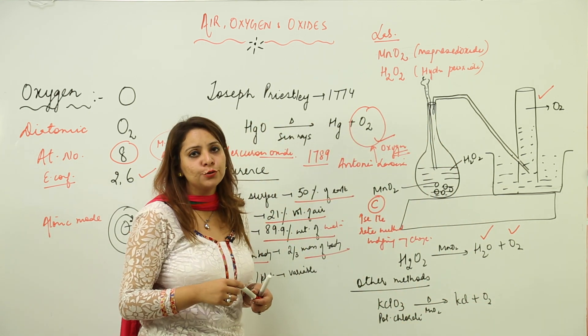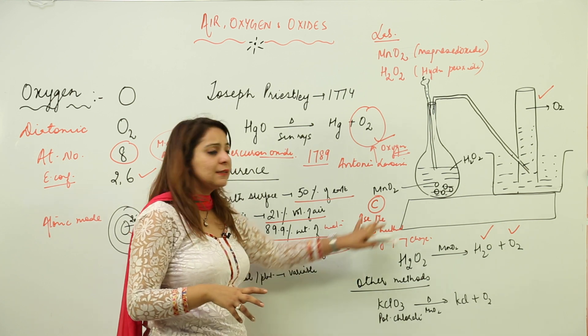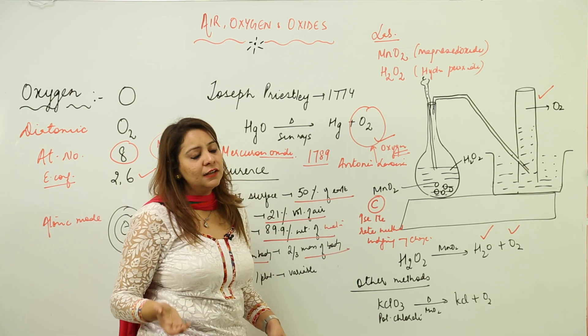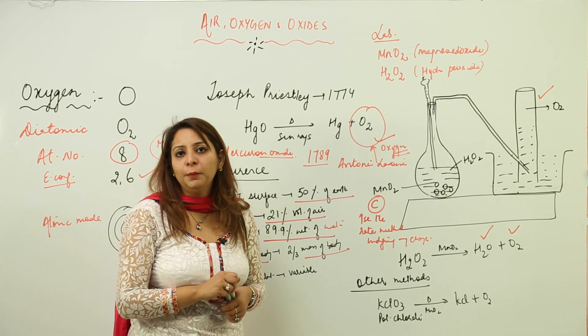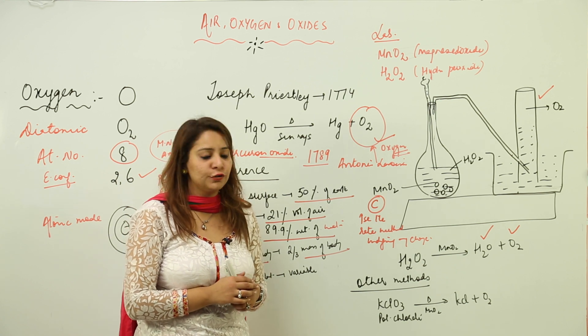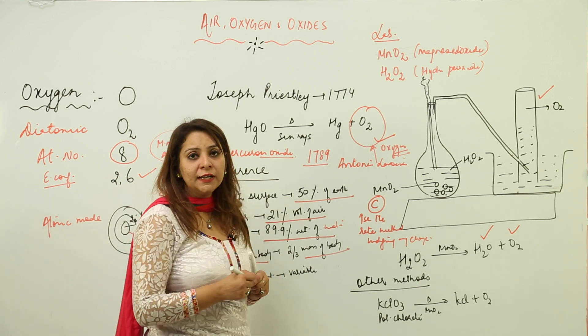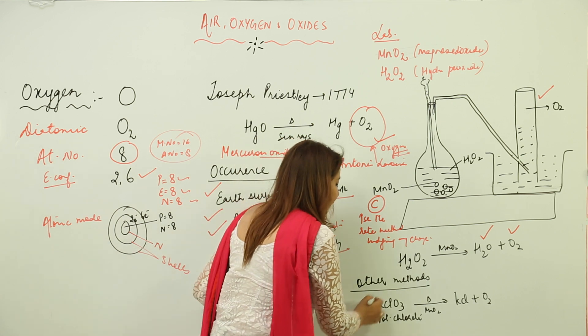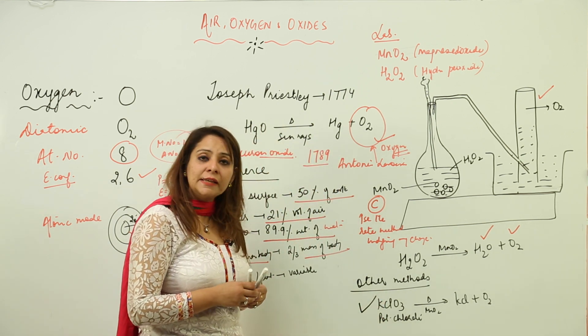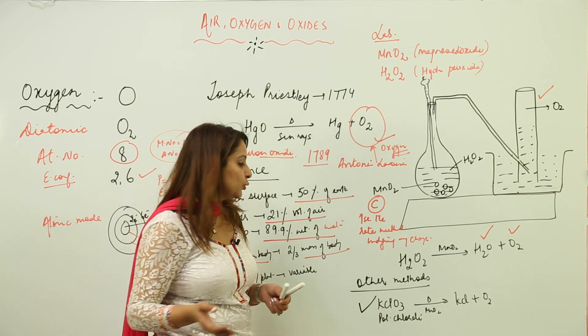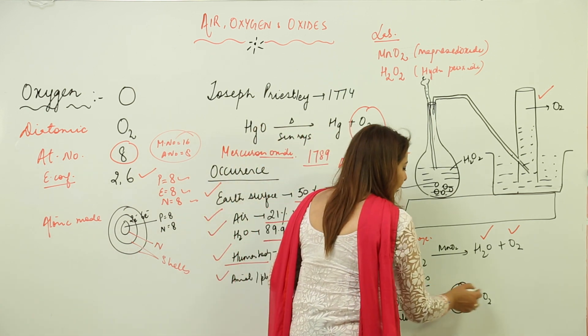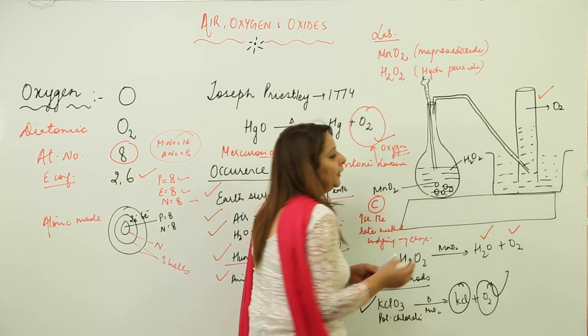So this is how oxygen can be prepared in the lab by the decomposition of H2O2 in presence of catalyst MnO2. There are certain other substances also which you can make use of if you need to prepare oxygen. We can carry out the decomposition of KClO3, that is potassium chlorate, in the presence of catalyst MnO2, so we'll get KCl and O2.